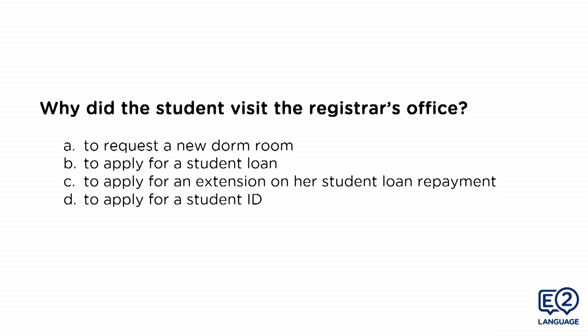Now let's read the question. Why did the student visit the registrar's office? Was it A, to request a new dorm room; B, to apply for a student loan; C, to apply for an extension on her student loan repayment; or D, to apply for a student ID?